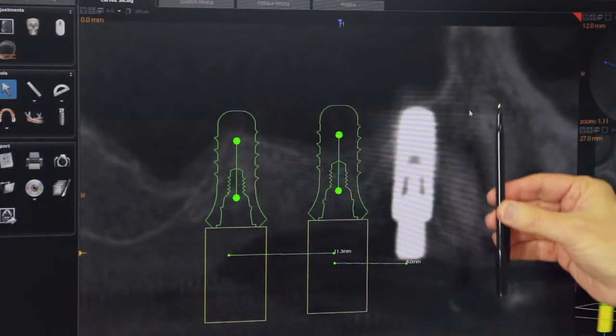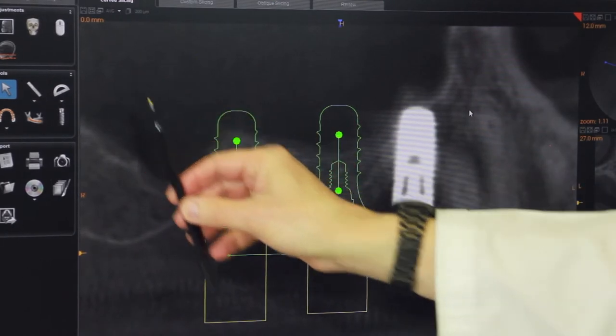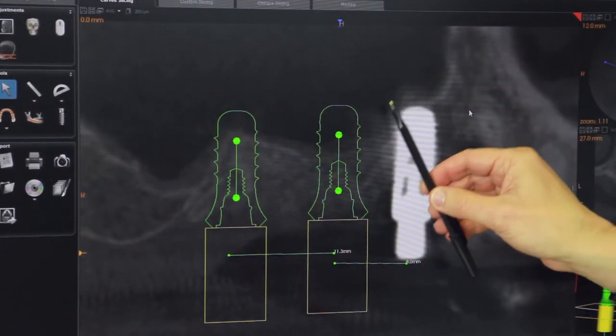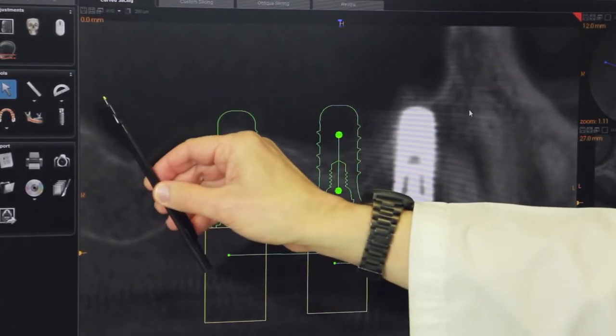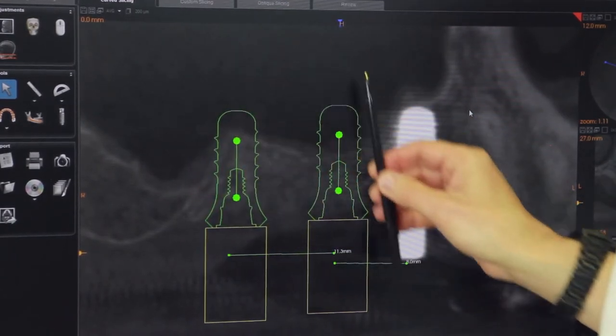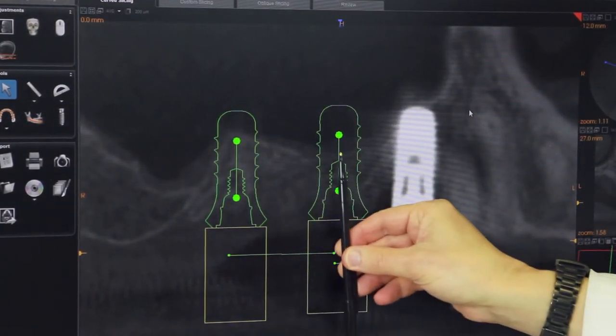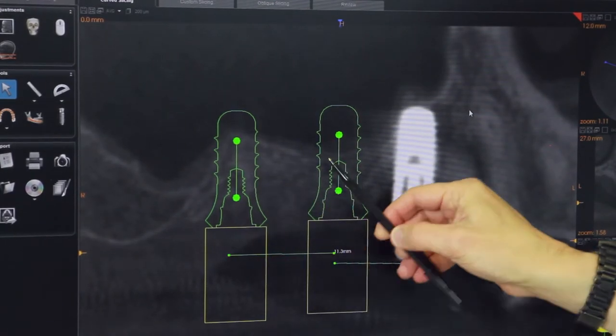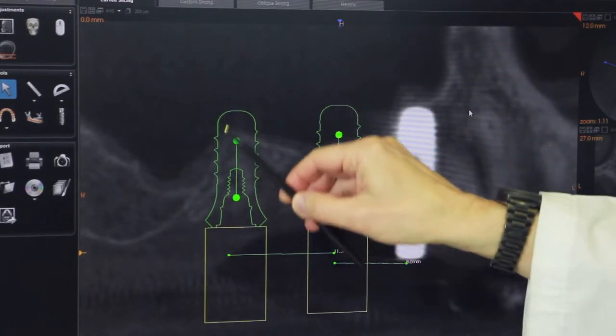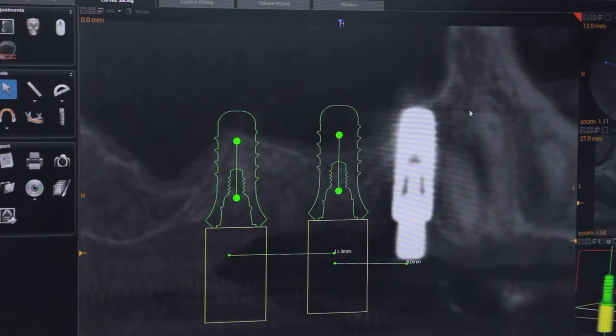Equally as important is this scan of the upper jaw bone which clearly delineates the borders of the maxillary sinus, which is an air cavity. As we can see here, if we put our implants in virtually, we can see that they would protrude into the sinus. We wouldn't know this without a three-dimensional scan.